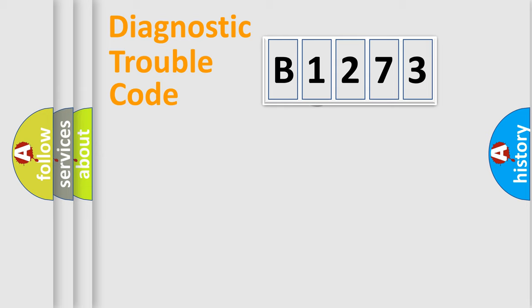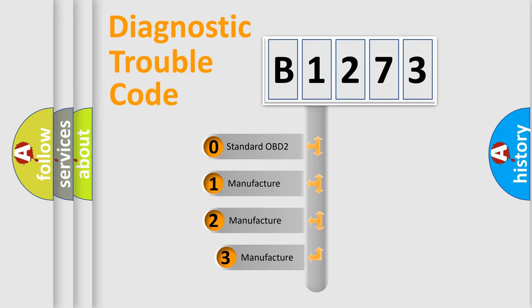Powertrain, Body, Chassis, and Network. This distribution is defined in the first character code.